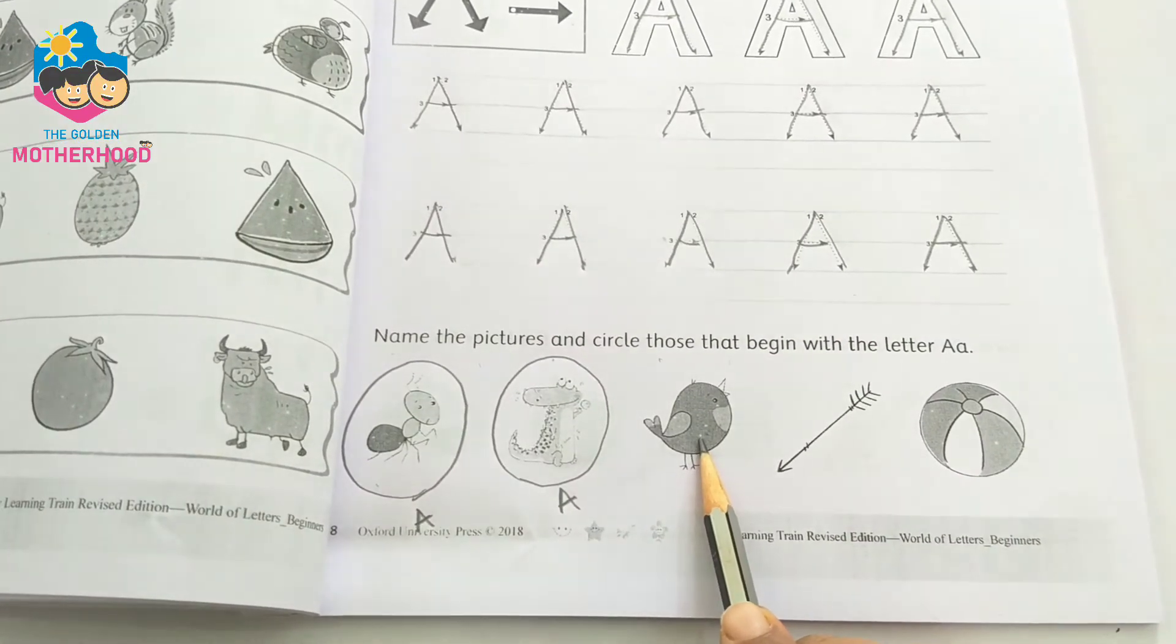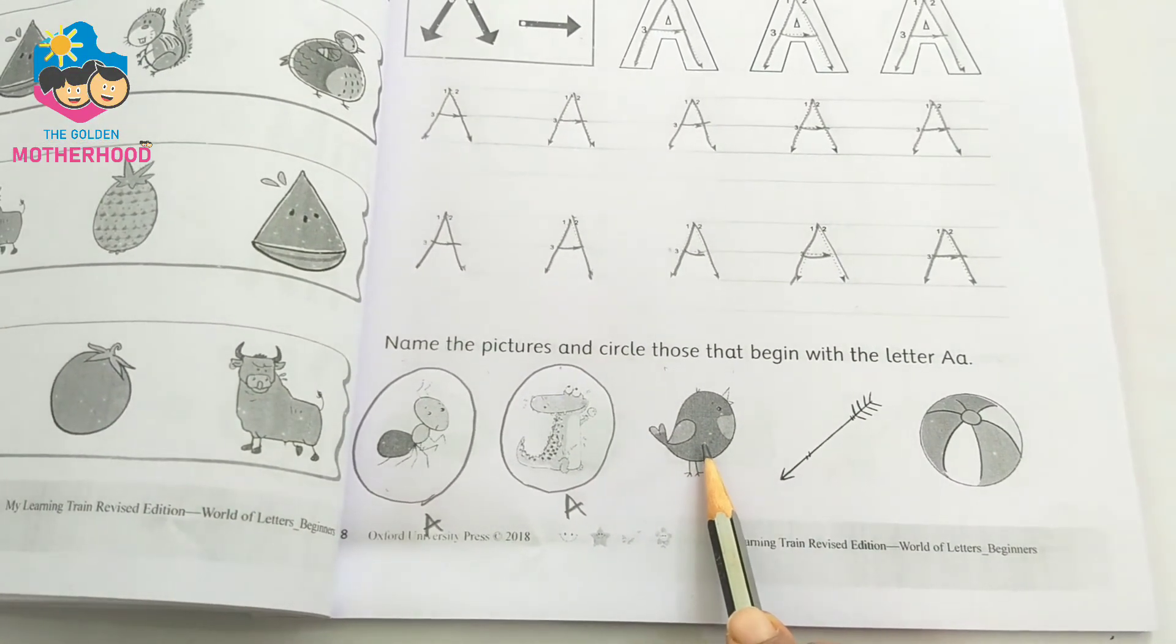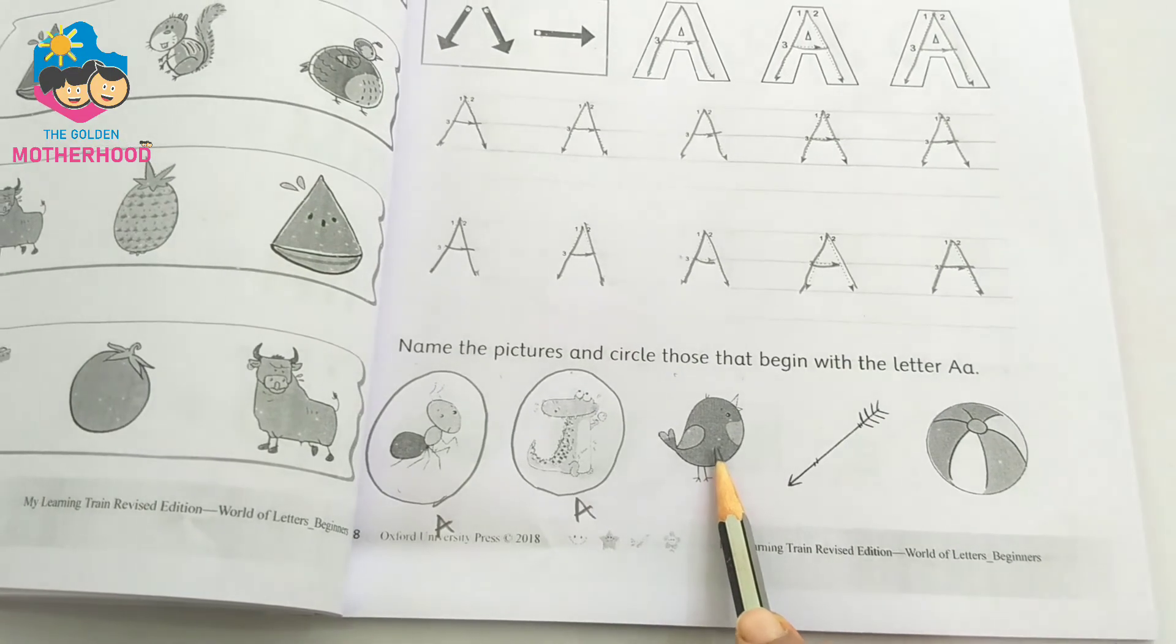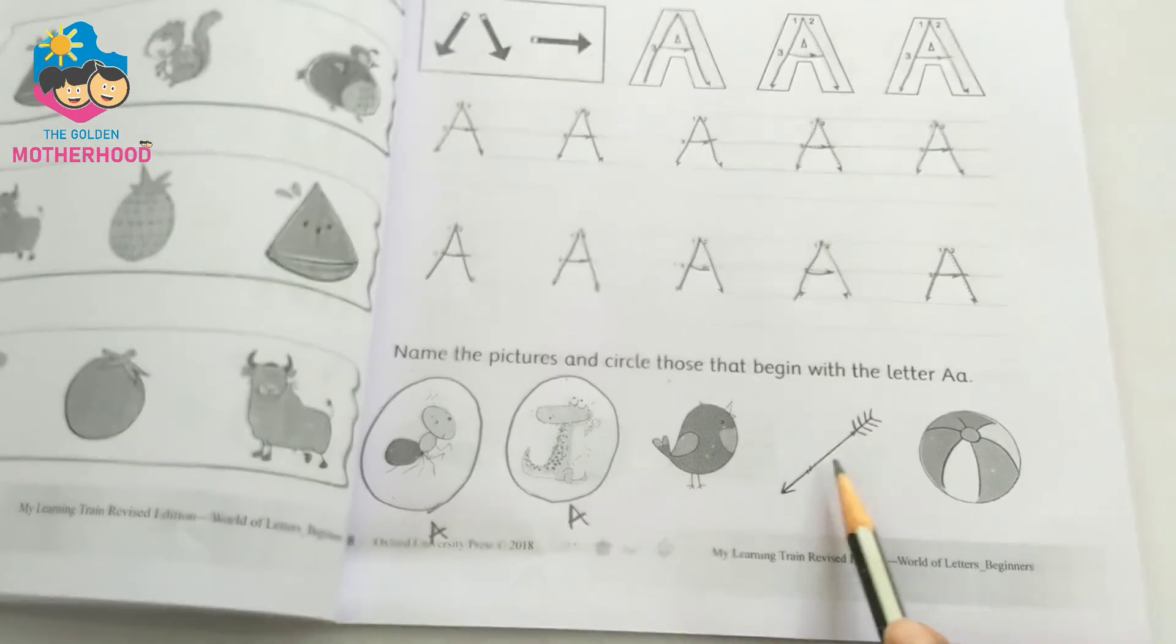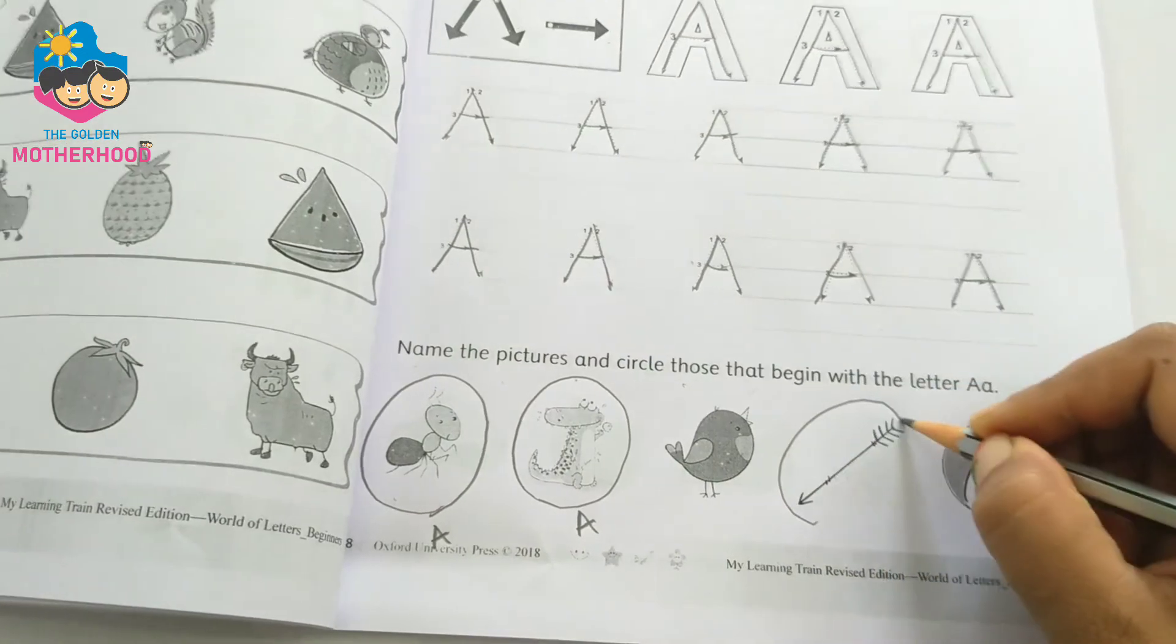This is bird. So we cannot circle it. This is arrow, A for arrow. So circle it.